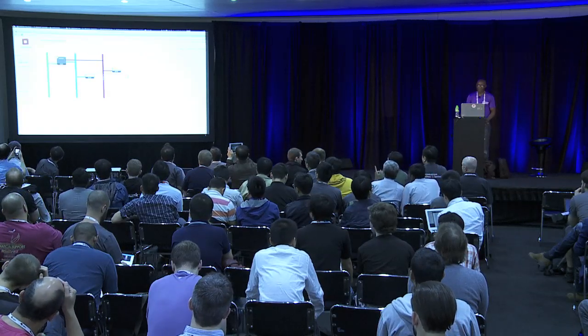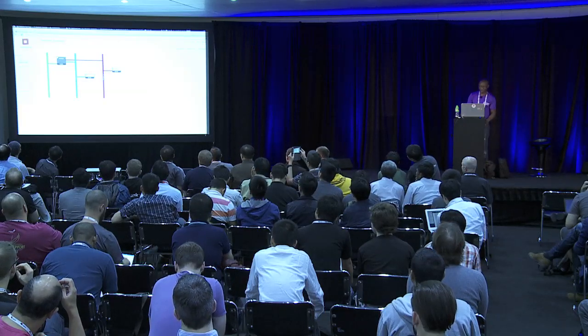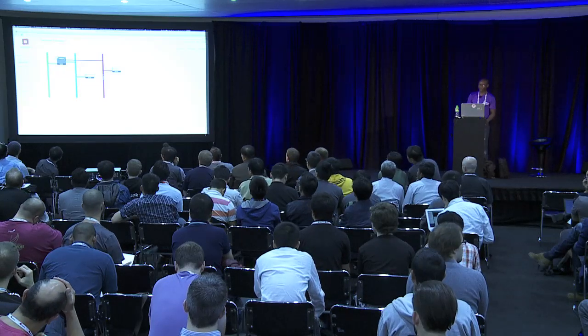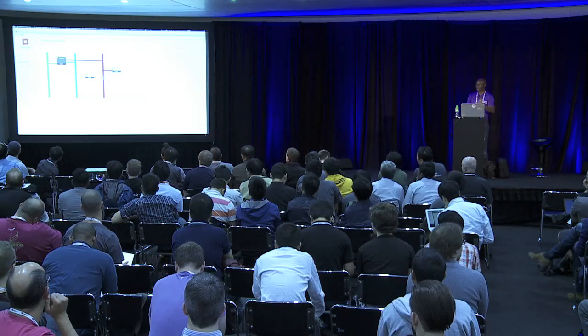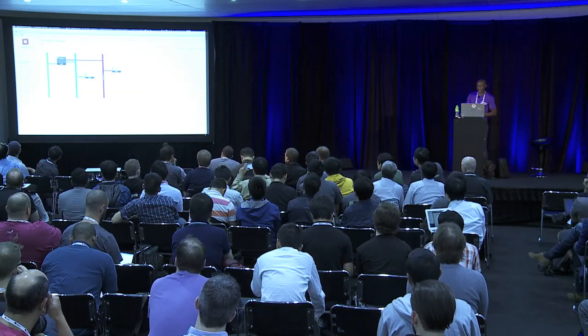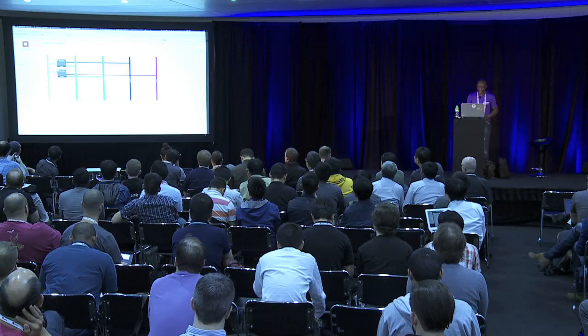Here is my Horizon dashboard for tenant 2. I can go to network topology. This is my network topology: a router connecting to an external network, then network 1 and network 2, each with one VM connected. You can already guess how many namespaces we're going to have. Three — one for the router and one for each network. So that would be three namespaces.